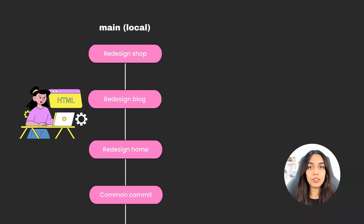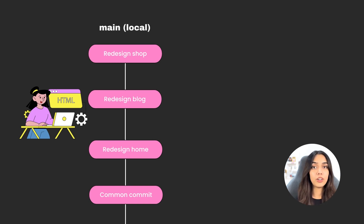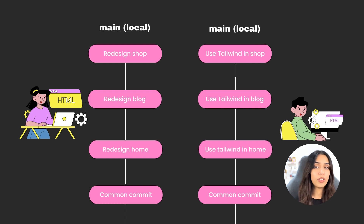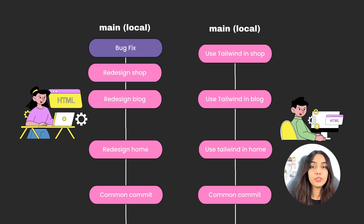Imagine the scenario: you are working on the main branch and you're currently implementing a very big feature. Ideally you will be creating commits along the way, documenting your history just in case something goes wrong, so you don't have to undo everything. Let's say you're working on redesigning the theme of your website and you decide to create a commit after updating every single page. You also came across a bug that you wanted to resolve right away, so you create another commit that just solves this bug.